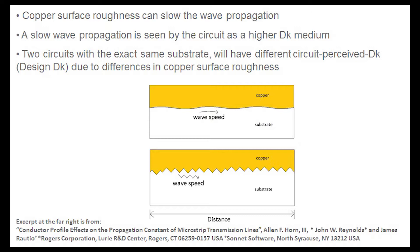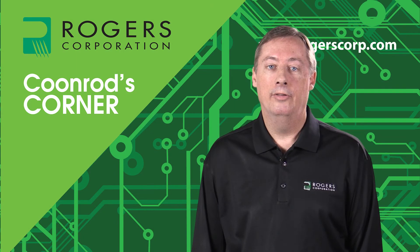We have several papers that really detail this topic. But in general, a rougher surface will cause a slower wave. A slower wave is going to be perceived by the circuit as a higher dielectric constant. You can do a very simple experiment, which we've done several times, and that is use the exact same substrate and use copper that is smooth on one circuit, copper that is rough on another, make the circuits, test them for propagation delay. And what you'll find is the circuit with a rougher surface will have much more delay, much slower wave, even though the substrate itself is exactly the same.